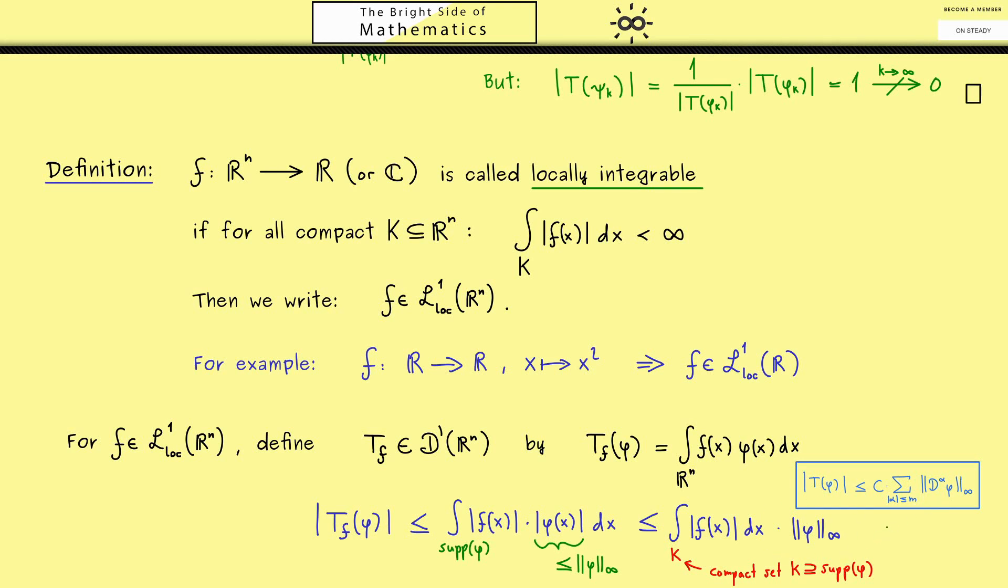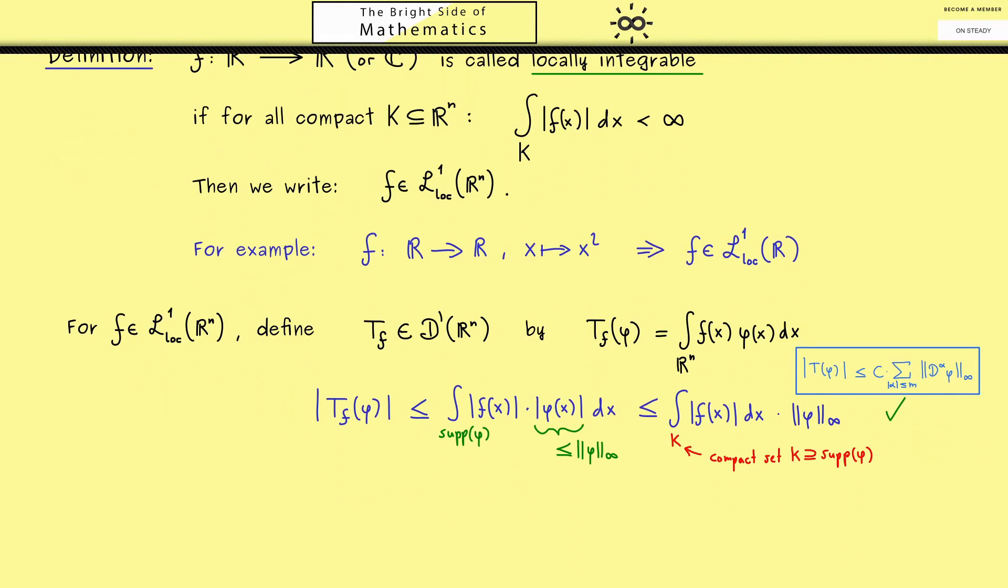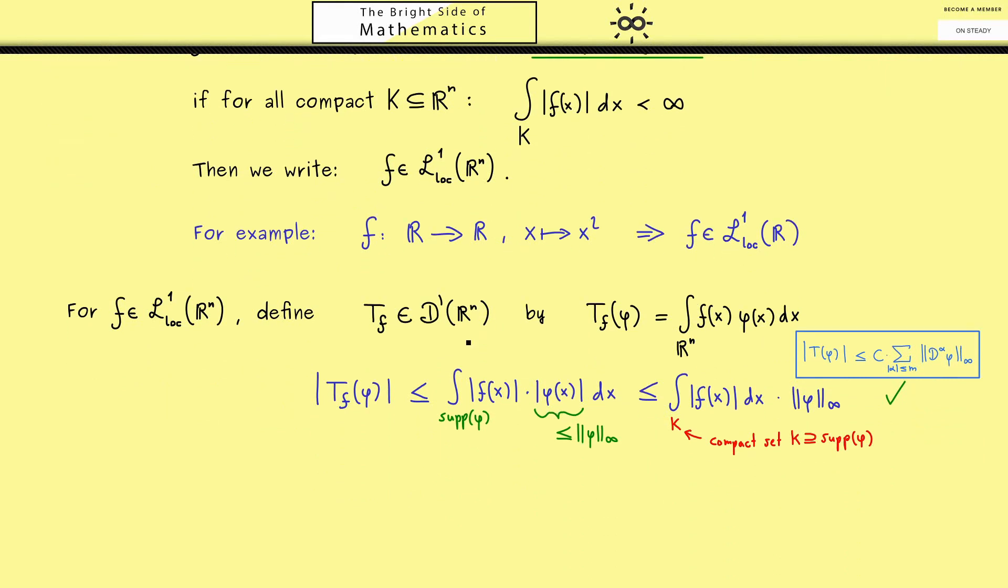In other words, we have indeed a distribution. So you see, this is similar to what we had in the last video, where we considered continuous functions. The distribution here is essentially given by a normal function f.